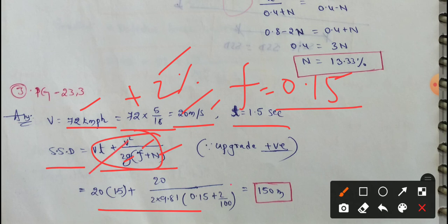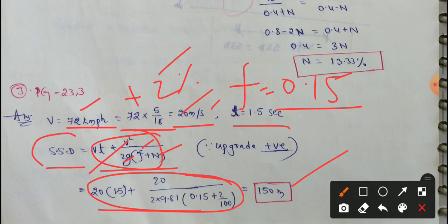Simplifying the final calculation confirms the SSD value is 150 metres. To summarize, we found the velocity, the reaction time, the coefficient of friction value, the gradient value, and substituted them all to get the required SSD.